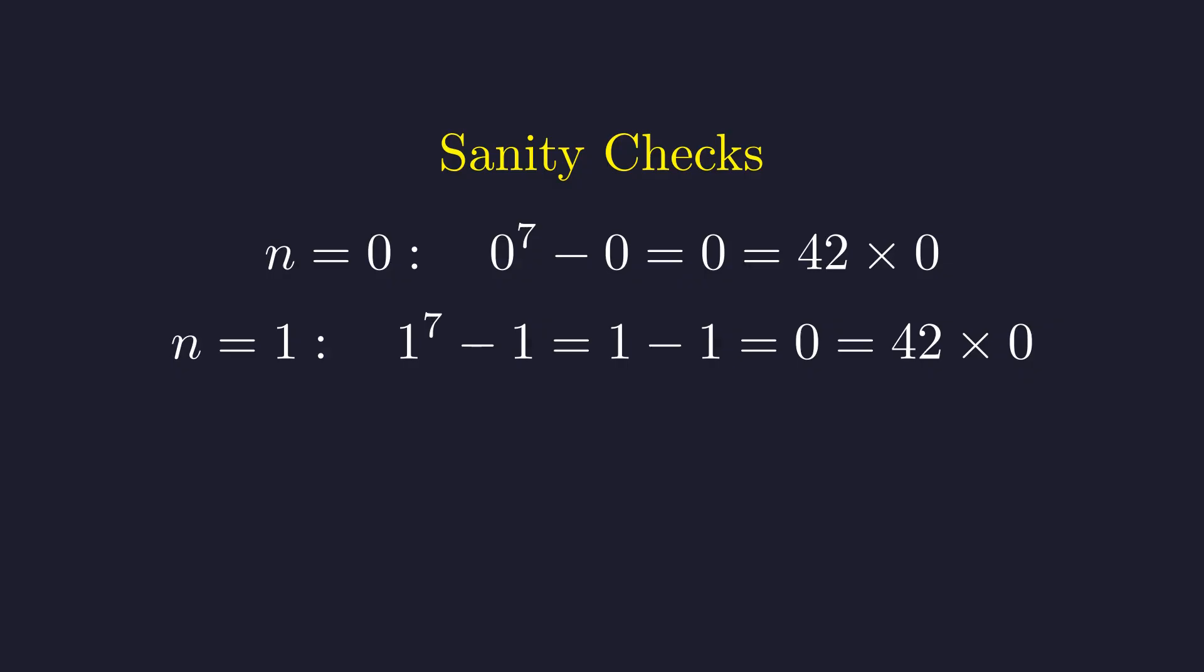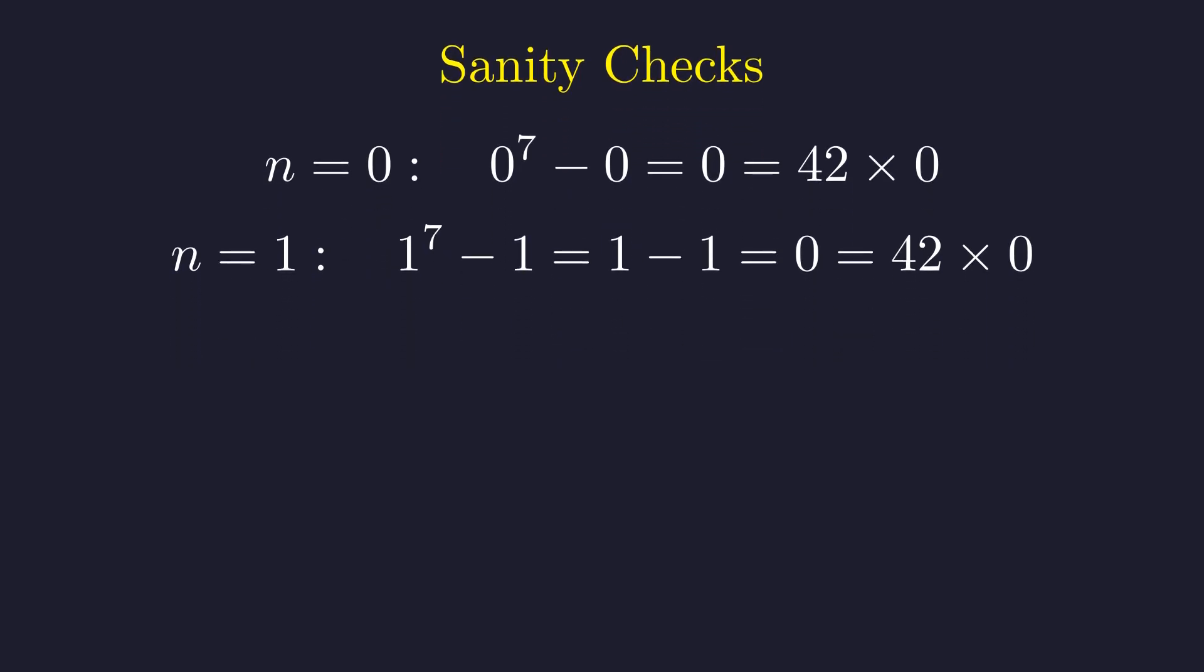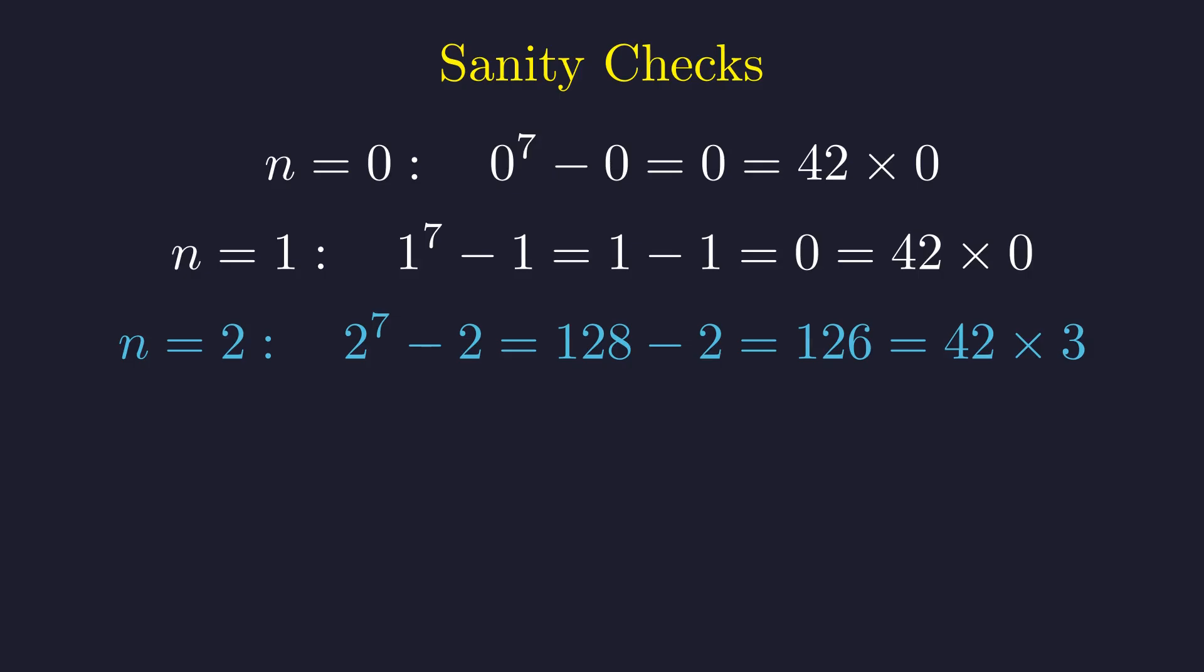For n = 1, we get 1^7 - 1, which is just 1 - 1 = 0. Again, divisible by 42. For n = 2, we get 2^7, which is 128. Minus 2 gives 126. And indeed, 126 = 42 × 3.